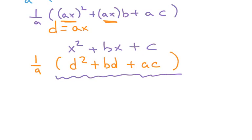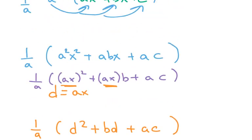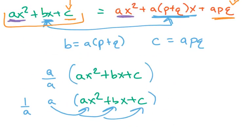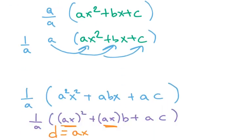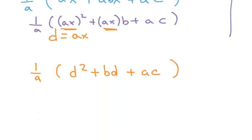Notice that this is almost the same thing as x squared plus bx plus c. The only problem here is that we have an a here. So if I say d is x, these otherwise, outside of this a right here, they're pretty much the same.